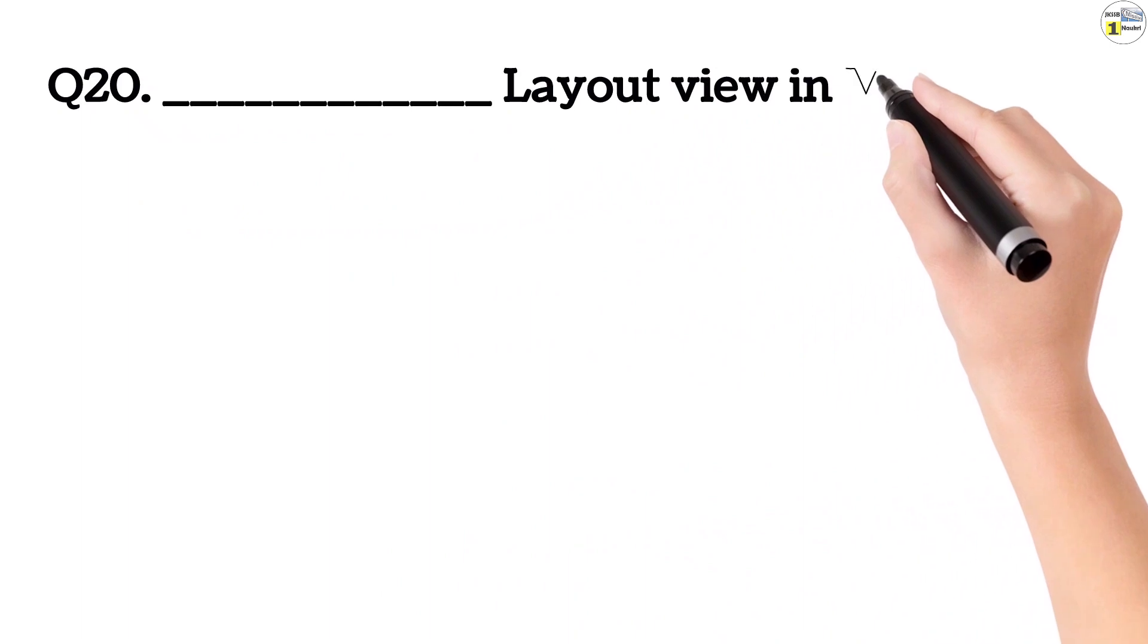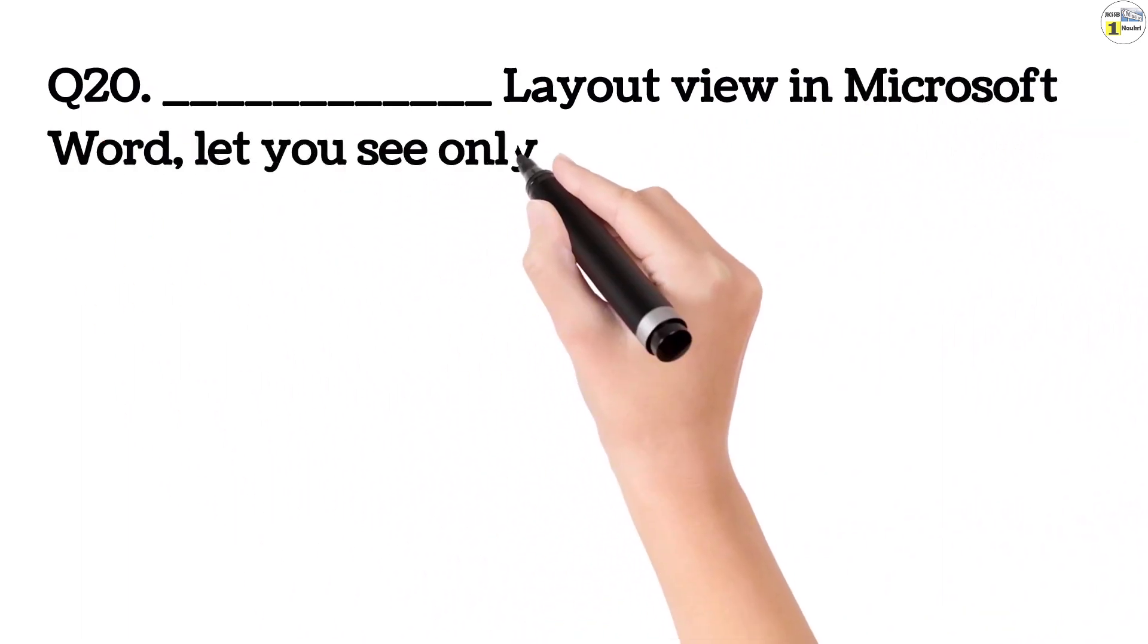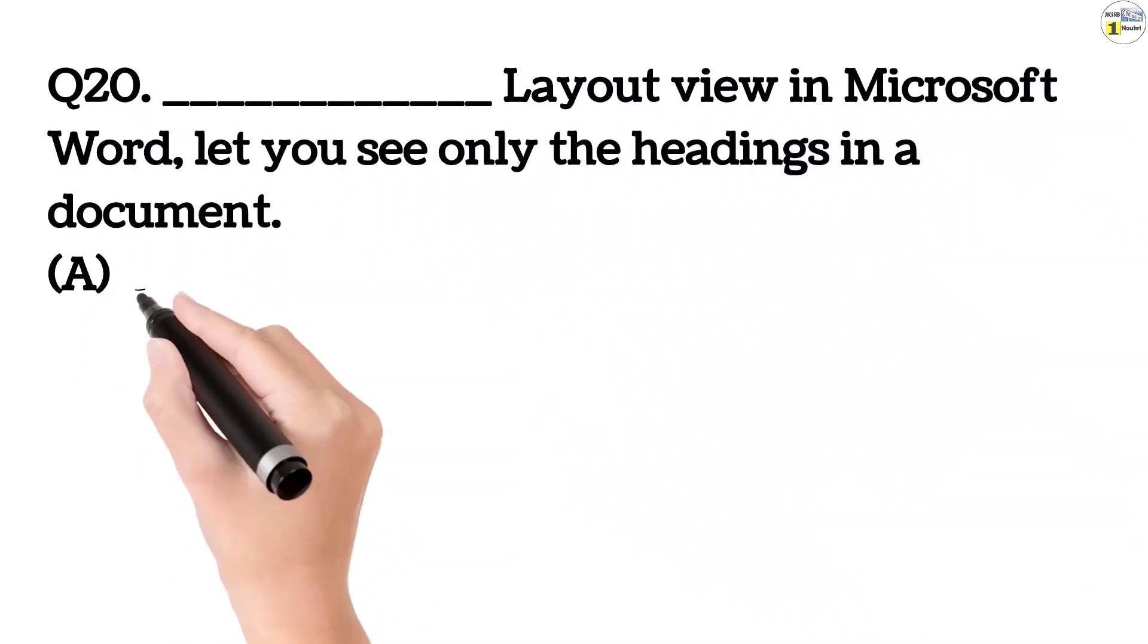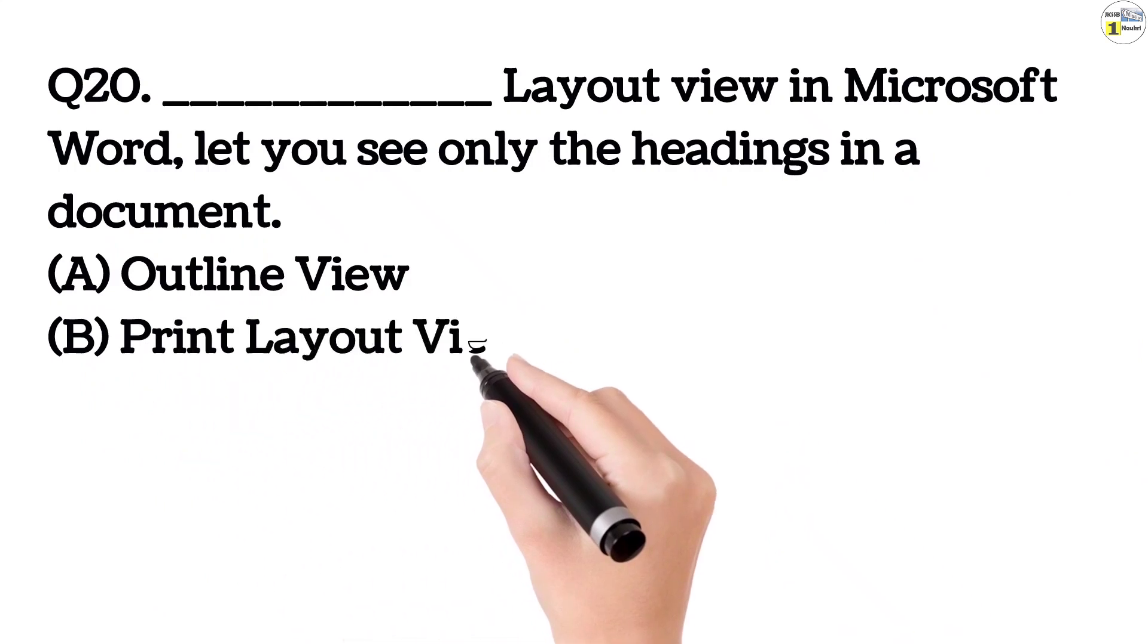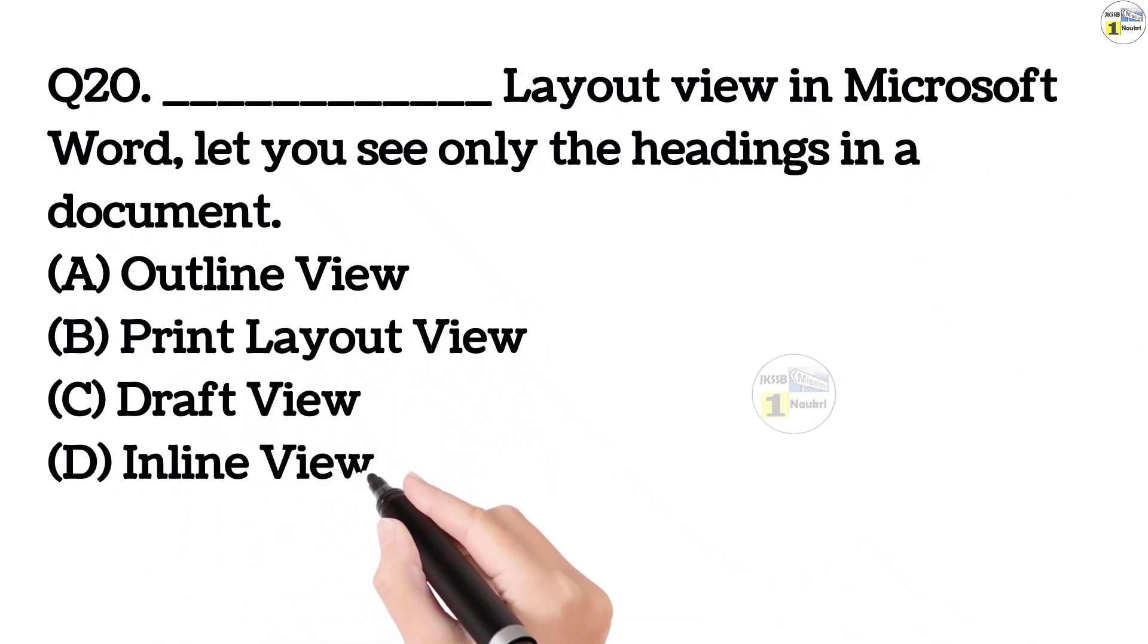Question number 20. Dash layout view in Microsoft Word lets you see only the headings in a document. Option A, outline view. Option B, print layout view. Option C, draft view. Option D, inline view. This answer is option B, print layout view.